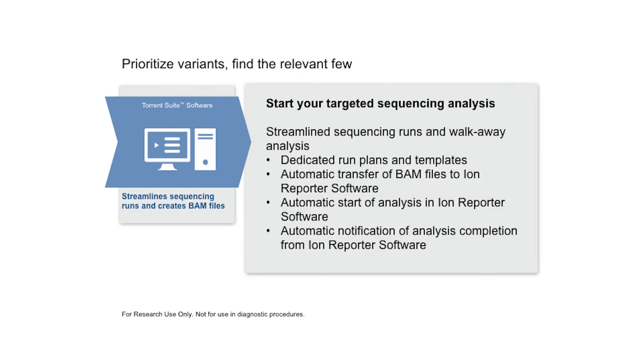As the data comes off the sequencer, you start your targeted sequencing analysis. This is where Torrent Suite software, also known as TSS, streamlines the sequencing runs with dedicated run plans and templates. Then TSS creates BAM files and automatically transfers them to Ion Reporter, so you can walk away and continue working — confer with a colleague, get coffee. BAM files, you ask? They are binary alignment map files that contain sequence alignment data.